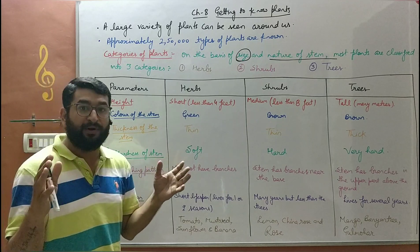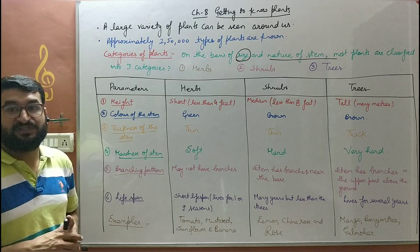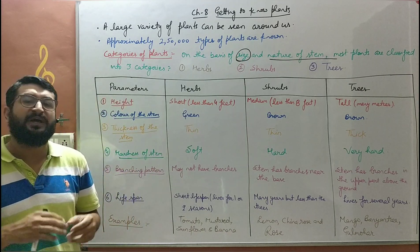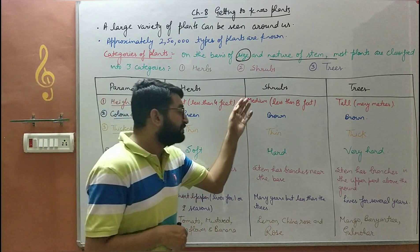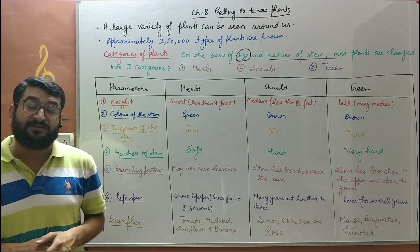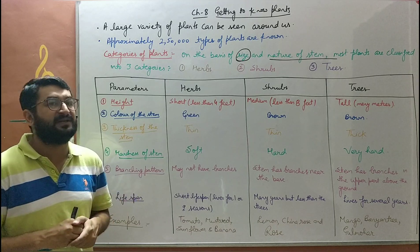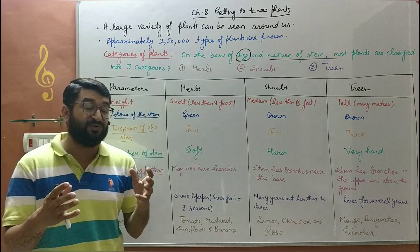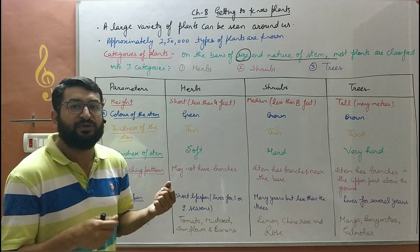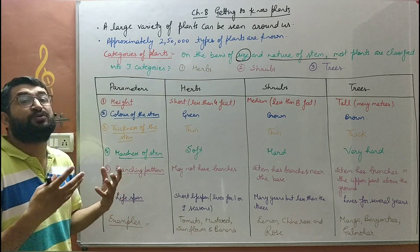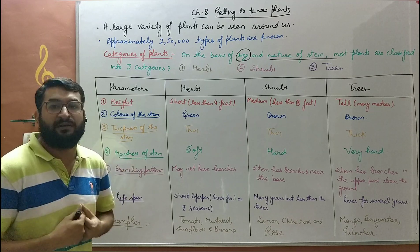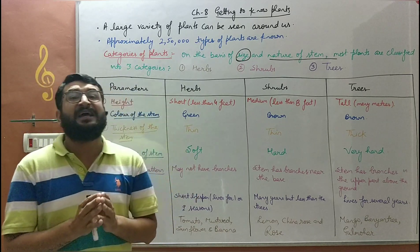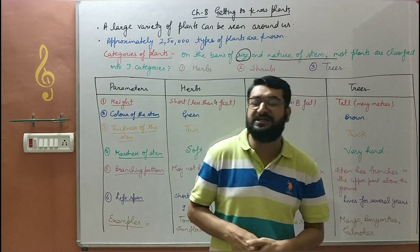Next is hardness of the stem — its stiffness or rigidity. Herbs have a soft and flexible stem; you can break it easily by applying force. Shrubs have a hard stem — somewhat flexible, and it does not break easily. Trees have a very hard stem. To cut a tree, you need specialized devices like a chainsaw or manual saw. From trees we get wood to make timber for furniture and so on.